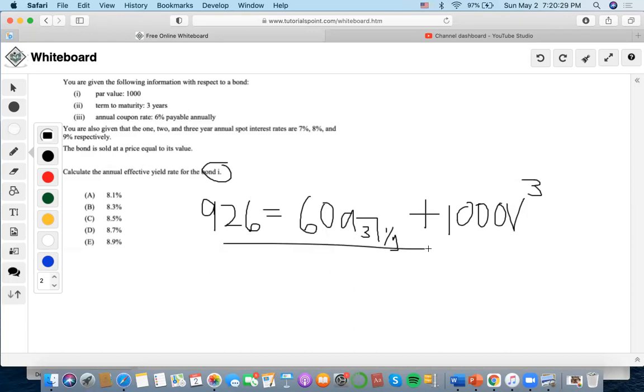So now we have our bond pricing formula and now we're just going to find the interest rate. So what we're going to do is we're going to do $926 as the present value, $60 as the payment, 3 as number of years, $1,000 as the future value.